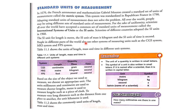People in different parts of the world also use other systems of measurement units such as the CGS system, MKS system, and the FPS system. CGS stands for centimeter, gram, and second. MKS stands for meter, kilogram, and second. FPS stands for foot, pound, and second. Table 11.1 shows the units of length, mass, and time in these different unit systems.